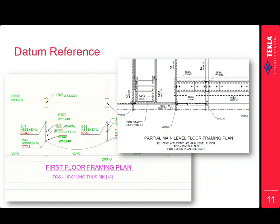What it's called is the datum reference. Oftentimes on your design drawings you have a note like this one here that says 'top of steel at 99 foot 3 and 3 quarters,' and then any other type of steel you want to call out in relation to that, either with a positive or negative value — so minus two inches or plus three inches — depending on the elevation of that individual beam.